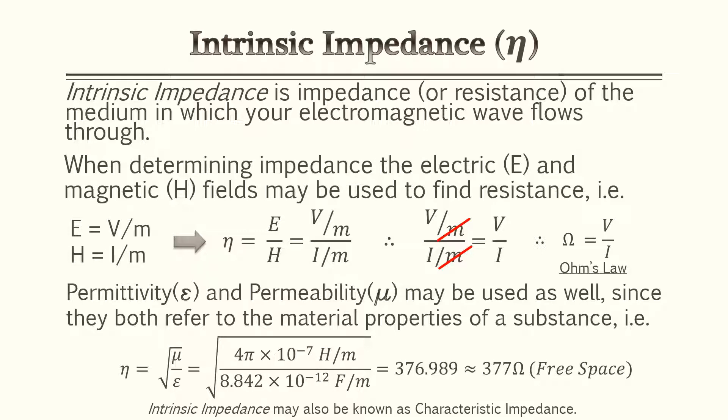It's also very common to use permittivity and permeability since they refer to the material properties of a substance; however, you'll need to use the square root when applying those formulas. A very common variable you'll see is 377 ohms for free space, and you'll use that in some practice problems. Also, intrinsic impedance may be known as characteristic impedance in some reference material.